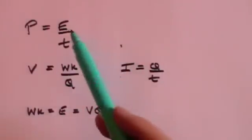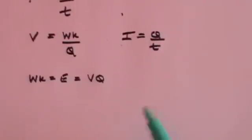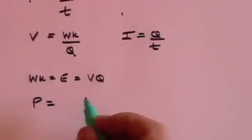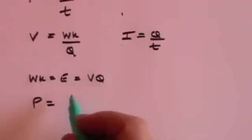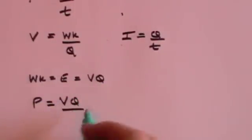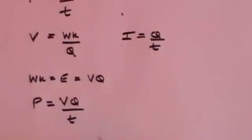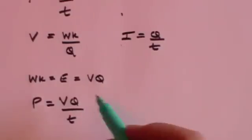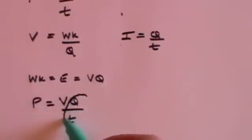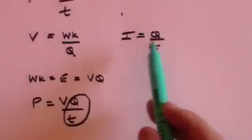And I can put that into this formula here. So now I've got that power is energy over time, but energy is VQ. So I've now got that power is VQ over time. But look, Q over T is current.